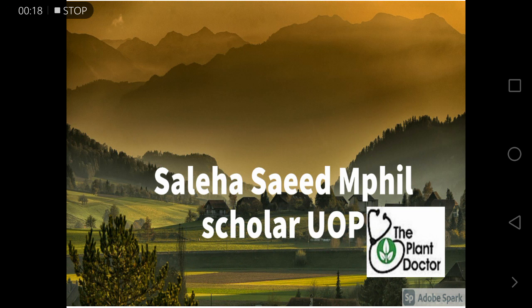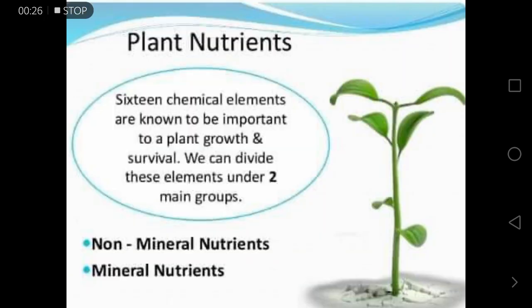Today I will tell you about plant nutrients. Plant nutrients is the study of the chemical elements and compounds necessary for plant growth and reproduction, plant metabolism, and their external supply. In the absence of these elements, the plant is unable to complete a normal life cycle or dies. We have 16 chemical elements known to be important for plant growth and survival.